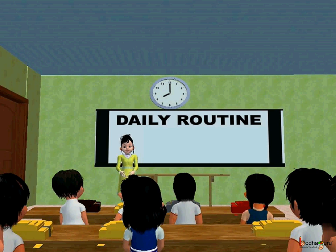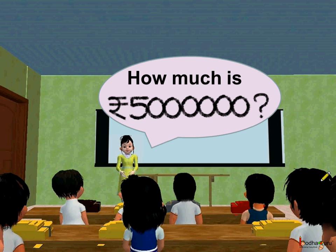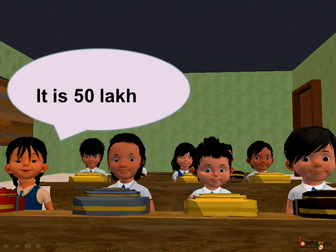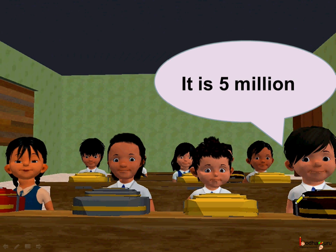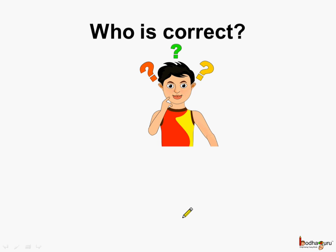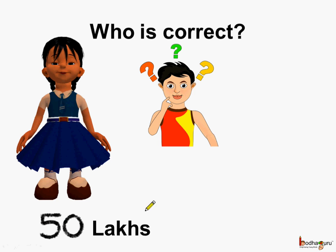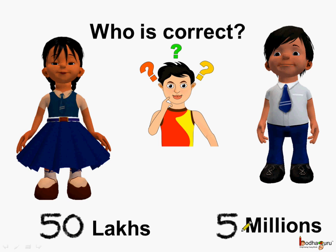In a class, a teacher asked: how much is rupees five followed by six zeros? Khushi replied it is equal to 50 lakhs, and then Aman replied it is equal to five million. So who is correct? Khushi said it is equal to 50 lakhs and Aman said it is equal to five million.